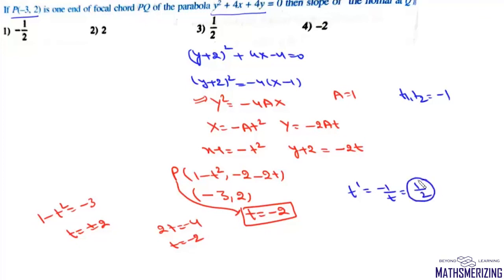Now what is slope of normal at Q? Slope of normal at any point Q is minus t dash and that'll be minus 1 by 2. So answer to this question is simply option number one.